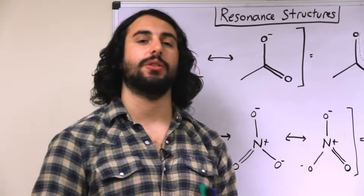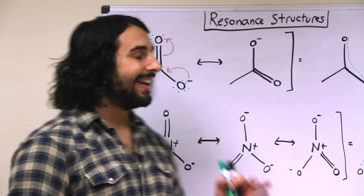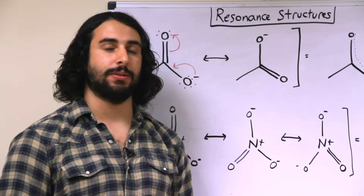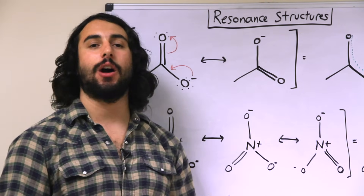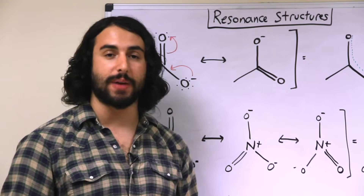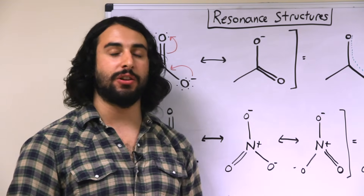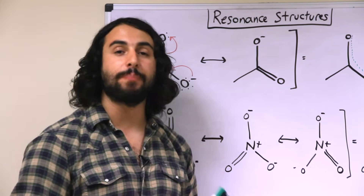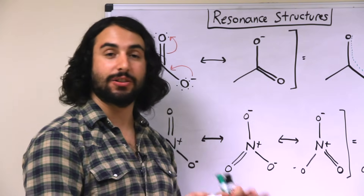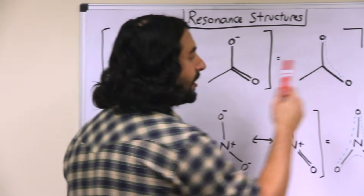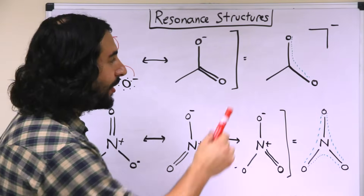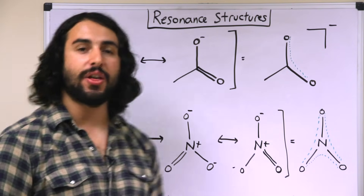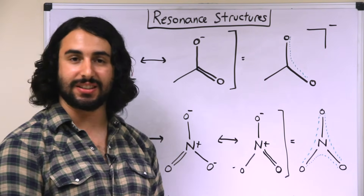The important thing we want to understand about resonance structures is that individual resonance structures do not exist. We draw them that way because they help us understand chemistry and how molecules behave. But in reality, the only thing that exists is a composite resonance structure that represents the distribution of the pi electron density around the molecule. So there is partial pi electron density distributed all along that portion of the molecule — that's what truly exists in nature.